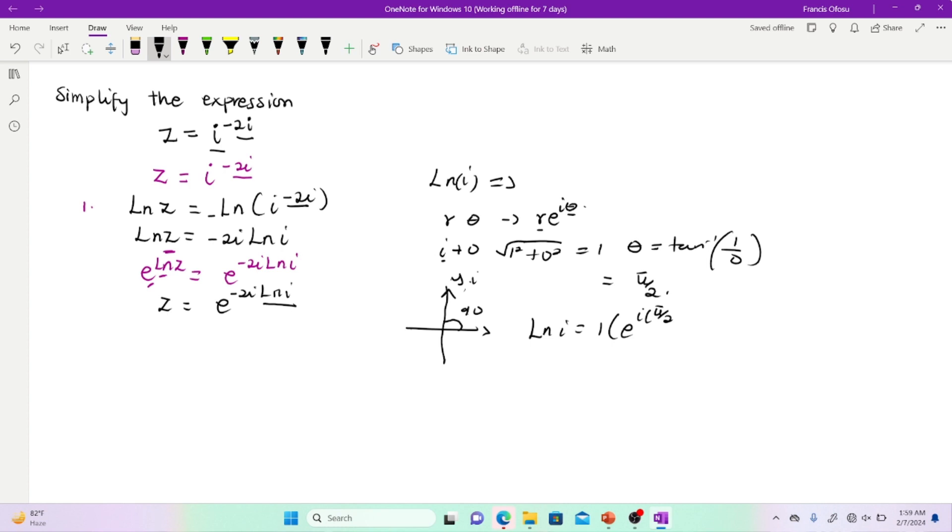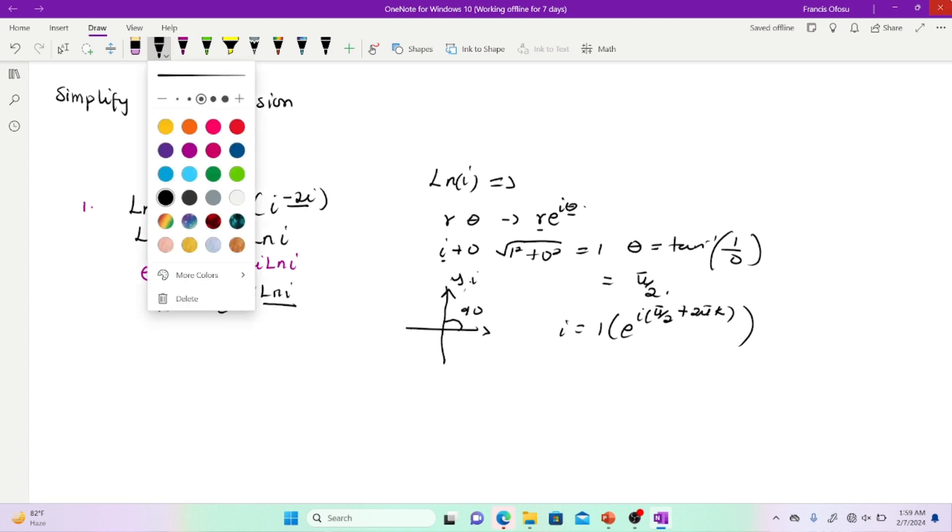But we use the extended argument. So we add a factor 2πk to it. So at this point, I'm going to have, so I'm replacing my i. So let me clear the ln. Our i is actually equal to this. Our i is equal to this expression.